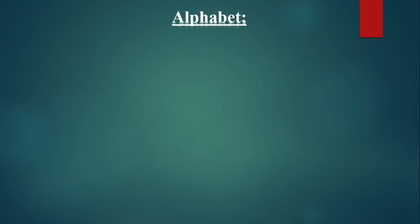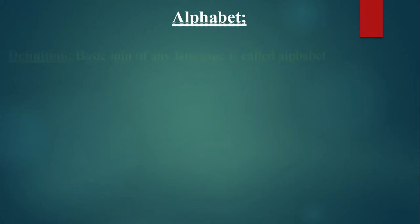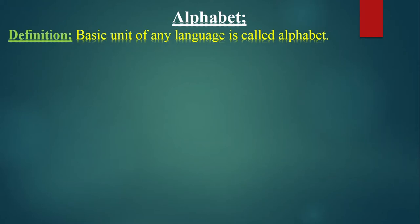Before starting, we will have some basic activities. We will start from alphabet. Before starting alphabet, we will discuss some important points. The definition of alphabet is: the basic unit of any language is called alphabet. Grammar, as I have discussed in previous lectures, has four kinds: syntax, orthography, etymology, prosody, and phonology.